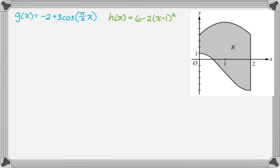So to find the area of this thing, I want to do the integral from zero to two of the top curve, which is h of x, minus the bottom curve, which is g of x. And throw in a dx. And now we actually have to do this integral.